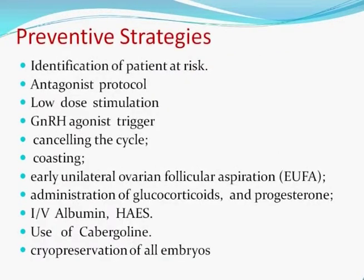Looking at preventive strategies, the first and most important is identification of the patient at risk. When a patient with polycystic ovaries comes to us, from day one we start counselling that if we start stimulation even for IUI with gonadotropins, there are chances of going into hyperstimulation syndrome, and what precautions to take. The second is deciding on the protocol — the antagonist protocol reduces the incidence, and we should start with low-dose stimulation.